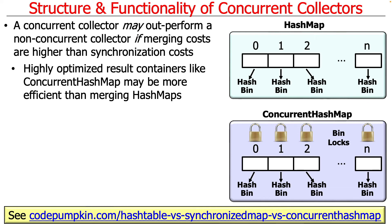If you have highly optimized result containers designed to work efficiently in multi-threaded programs — like concurrent hash maps — that may be faster than merging hash maps together. A hash map has a fixed array used as the hash table; you hash into one of the elements and it uses a collision resolution scheme, either a linked list or a balanced tree. A concurrent hash map has more or less the same data structure, but its locking strategy is vastly different. It has essentially a lock per hash table array entry, and uses compare-and-swap operations and spin locks.